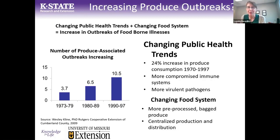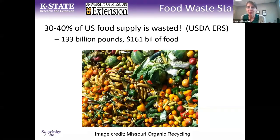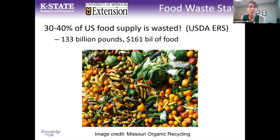So those are the first two issues: we really should eat more produce, and second, you can get foodborne illness from produce. The third issue is food waste, which is a really big problem in our society. It's estimated that 30 to 40% of our food supply is wasted, which is awful. I grew up on a farm and I know how hard farmers work to produce food — to think that 30 to 40% is just wasted when there are so many hungry people is awful.